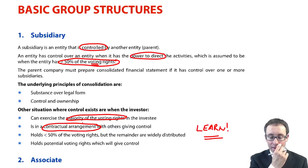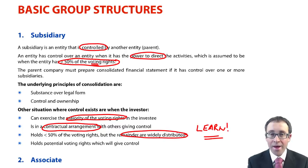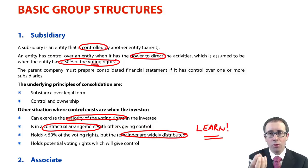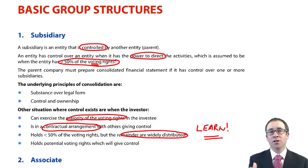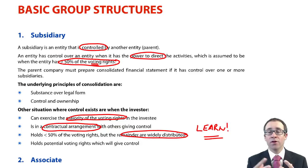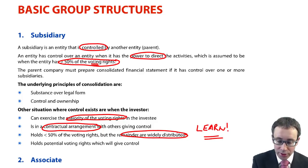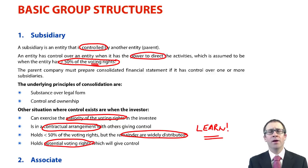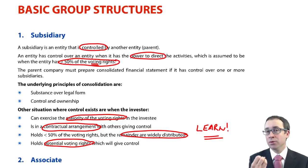Another situation is where you have less than 50% of the voting rights and no contractual arrangement, but the remainder of the shares are very widely distributed — thousands and hundreds of thousands of shareholders each owning a very small proportion. In that case, it would be very difficult for all those widely distributed voting rights to be brought together to vote against you. So if you hold a bit less than 50% but the rest of the shares are widely distributed, you are still deemed to have control. You may also have potential voting rights — perhaps through convertible debentures that can be converted into ordinary shares, giving you additional voting rights in the future.